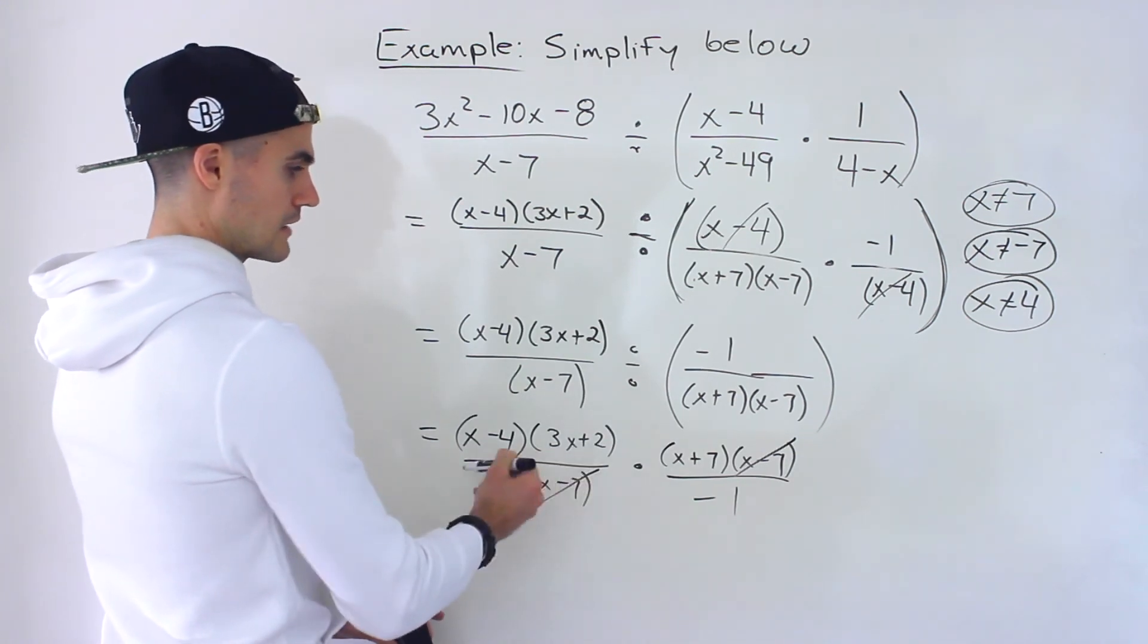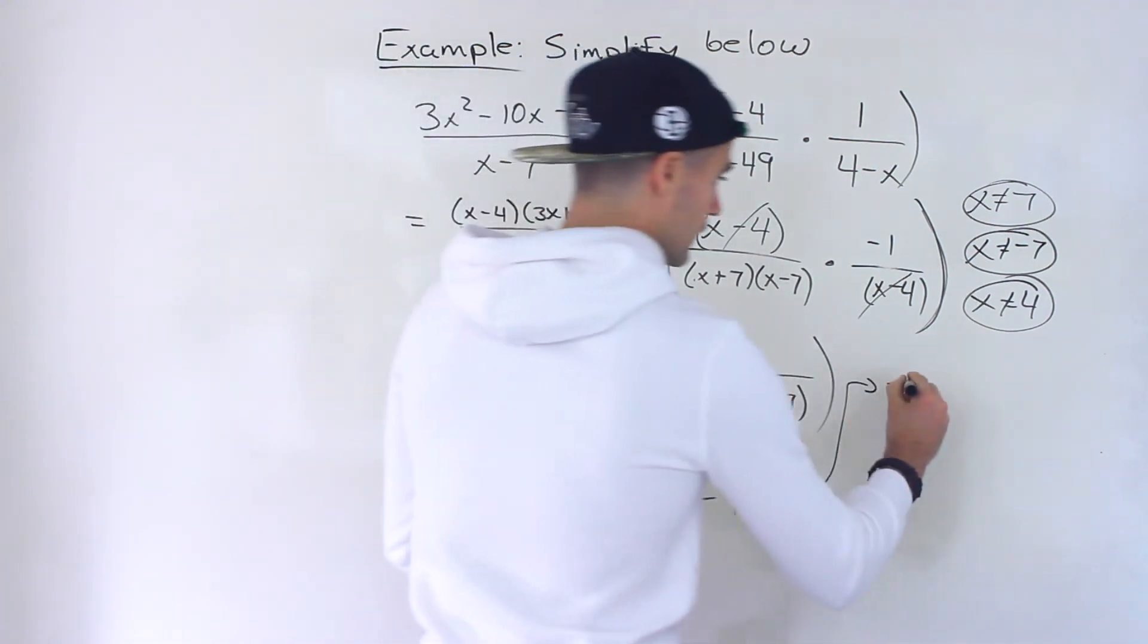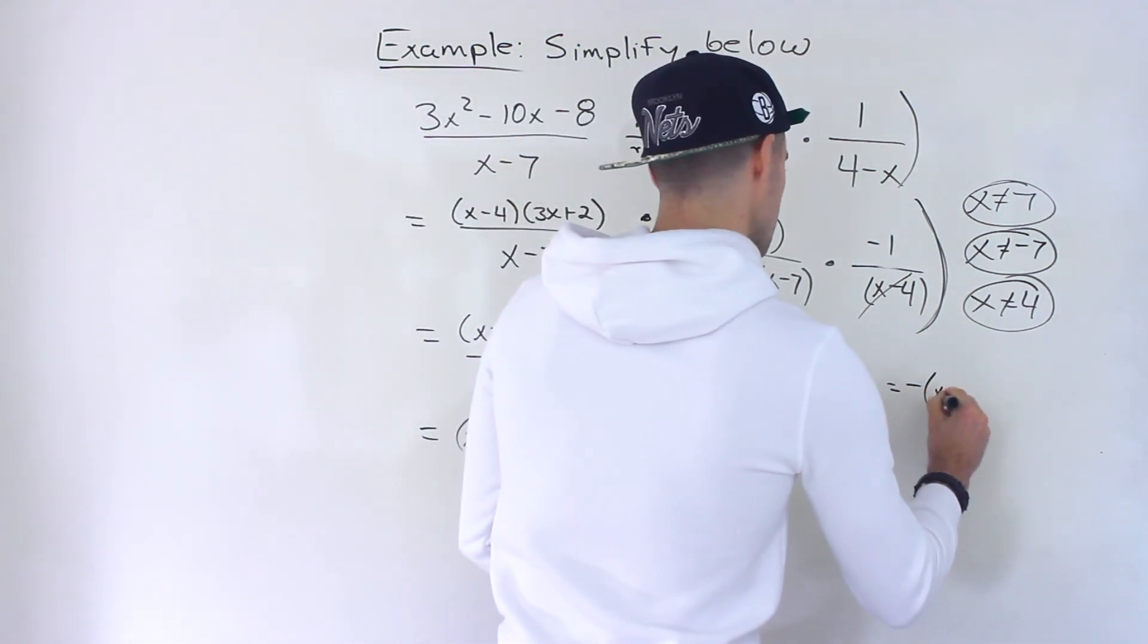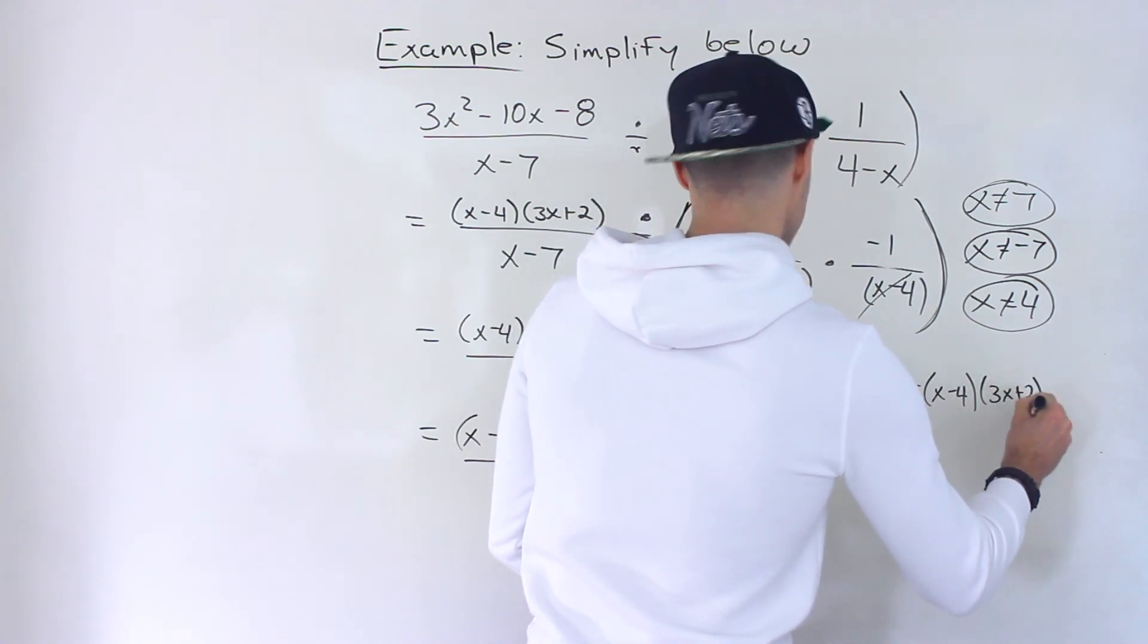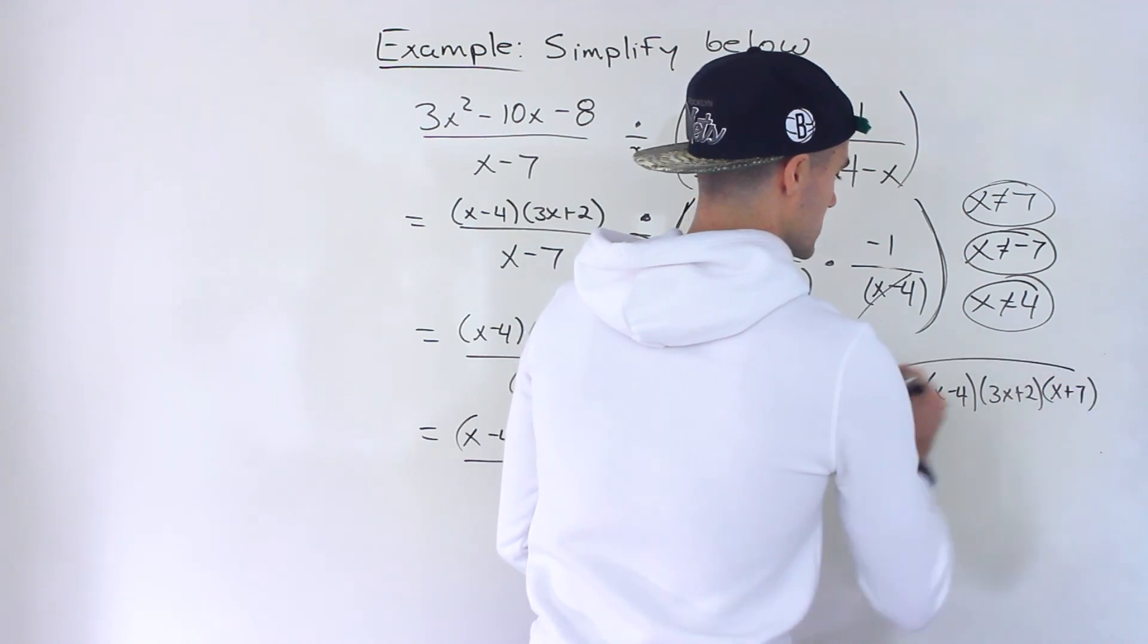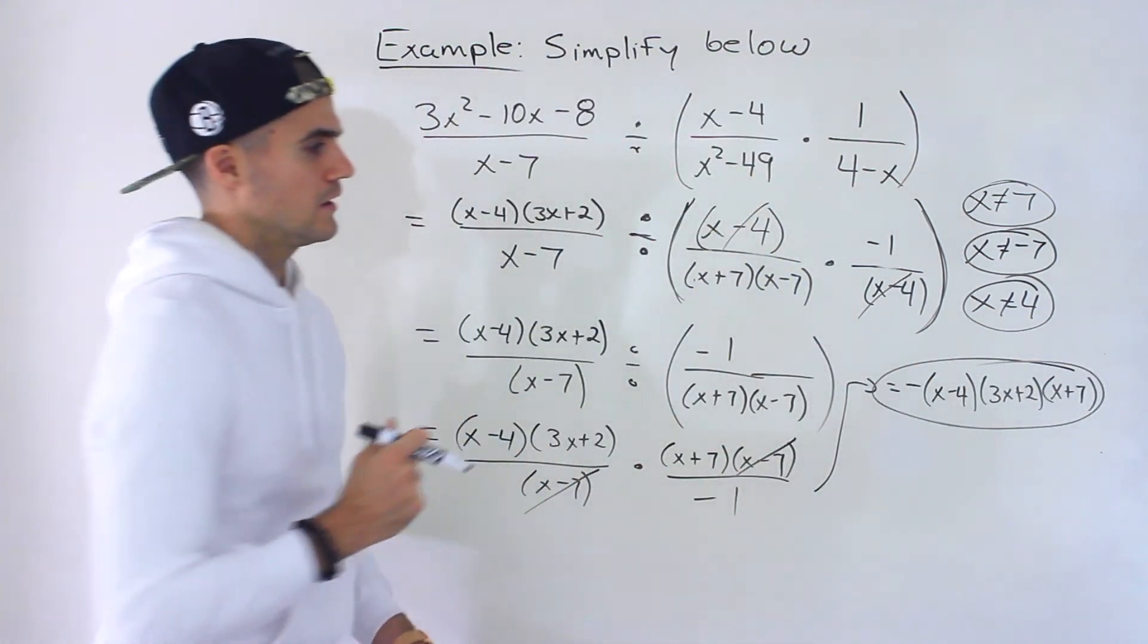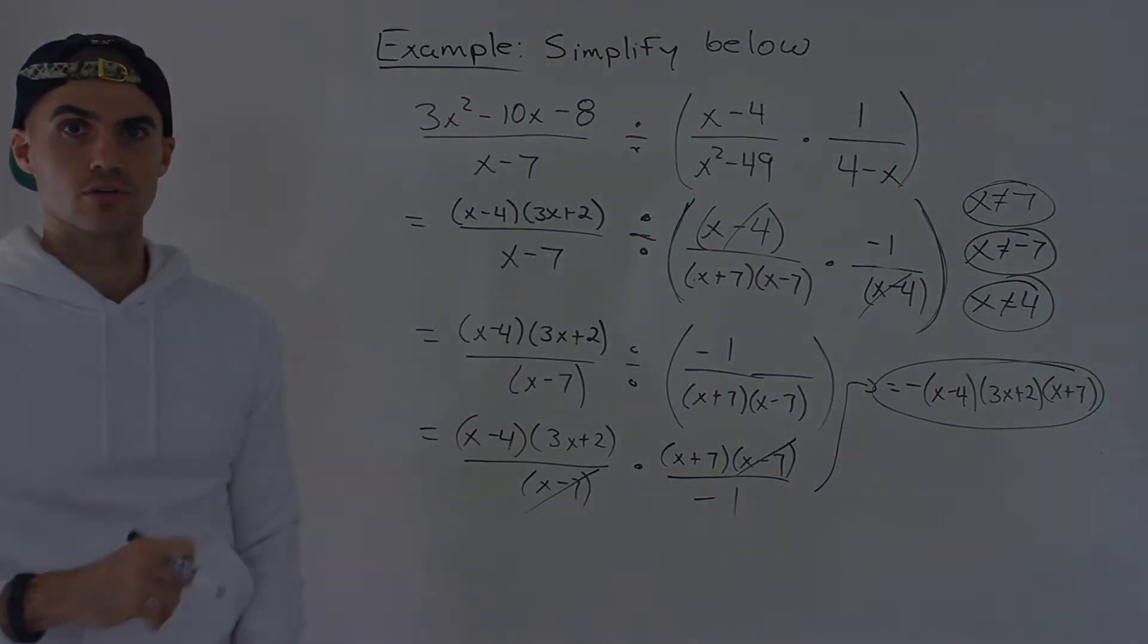Right and then nothing else cancels out and so the final answer, let's put the negative in front, it would be x minus 4 times 3x plus 2 times x plus 7. Right that would be the final simplified expression for that initial expression. OK thank you so much for watching.